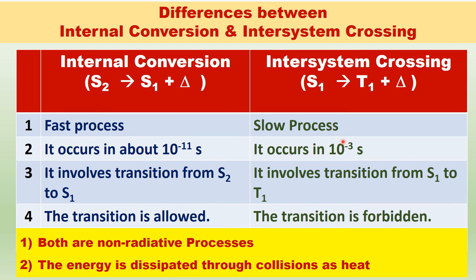Inter-system crossing is a slow process and occurs in about 10 to the power of minus 3 seconds, whereas internal conversion occurs very quickly in about 10 to the power of minus 11 seconds. What are the similarities? Both are non-radiative processes, and the energy is dissipated through collisions as heat.